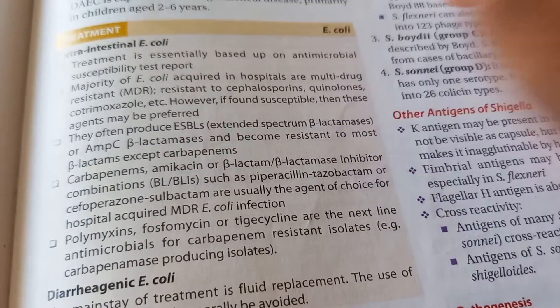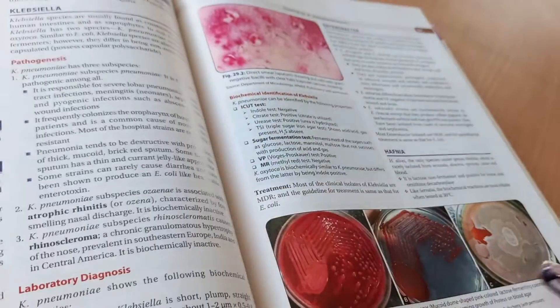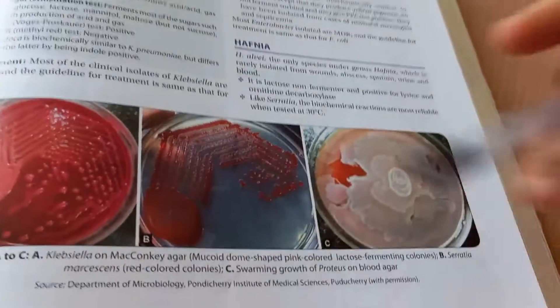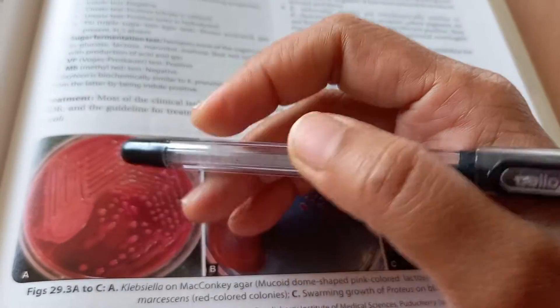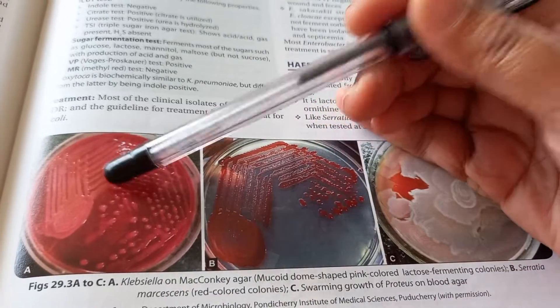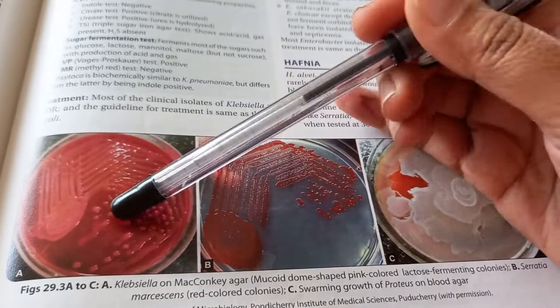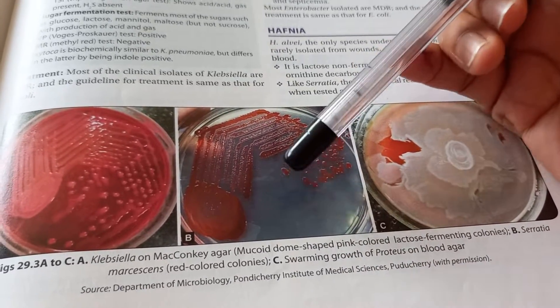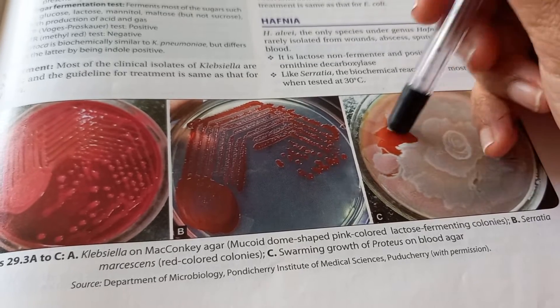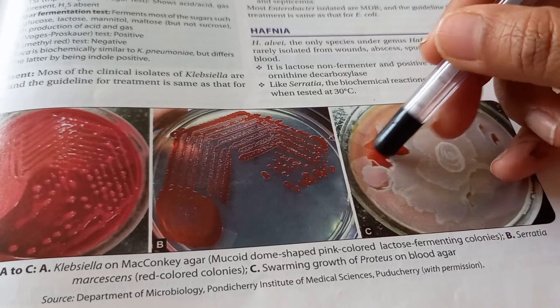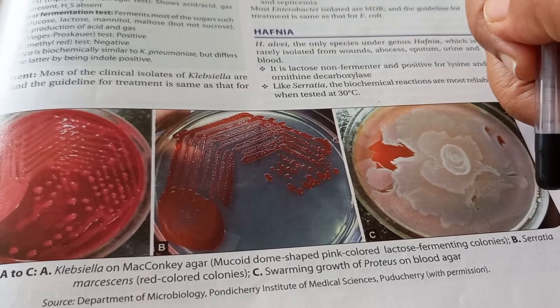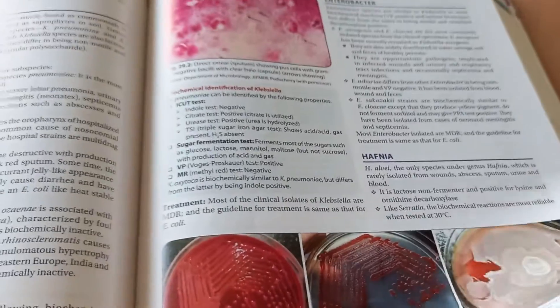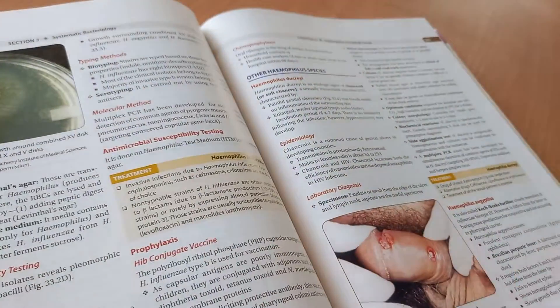Look at these beautiful images — this looks like a MacConkey agar, it's pink. And what is this? This is Proteus on blood agar — it has covered the entire blood agar, I can see only a little here. This book looks good, informative, and reliable for your exam.